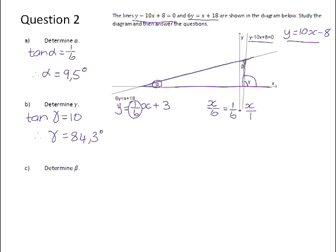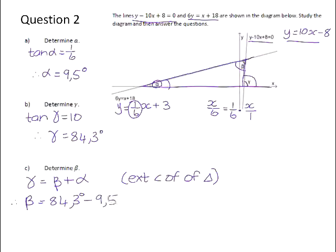So this angle here is actually the exterior angle of the triangle. And from our geometry, we know that the exterior angle of a triangle is equal to the sum of the interior opposite angles. And we need to give a reason. And the reason is just simply exterior angle of triangle. So therefore, beta will be equal to 84.3 degrees minus 9.5 degrees, which is 74.8 degrees.